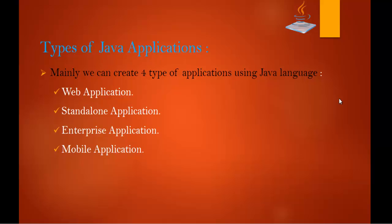So we can build both web applications and desktop applications using Java. The next type is enterprise applications — an application that is distributed in nature, such as banking applications. It has advantages of high-level security, load balancing, and clustering. In Java, we use EJB technology to build such enterprise applications.